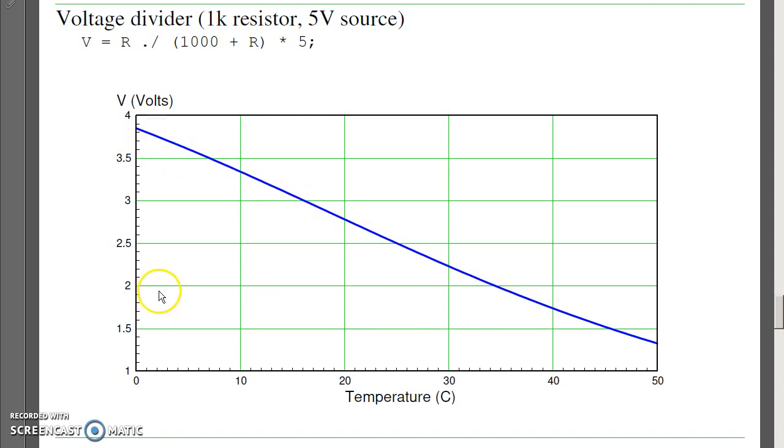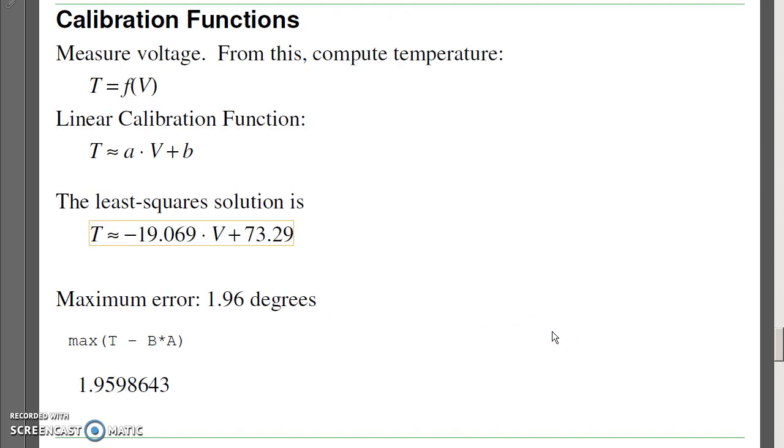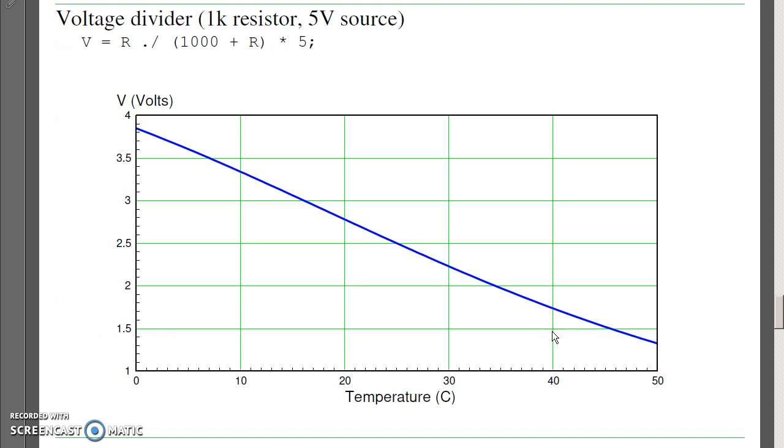What that means is now, if I measure voltage, I can tell you what the temperature is. Calibration is trying to come up with a mathematical expression relating temperature to voltage. Now, what you can do is go backwards. If I know voltage, I know resistance. I know resistance and I know temperature.